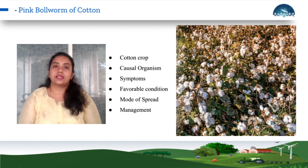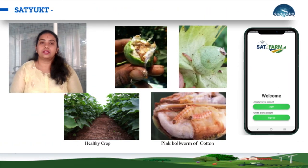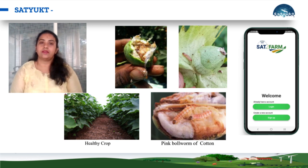The cotton bolls which are infected at a young age eventually fall off, while the larger ones remain on the plant itself. The caterpillars make an aperture to enter into the cotton bolls, and these holes close eventually, making it difficult to differentiate between a healthy boll and an infected one.